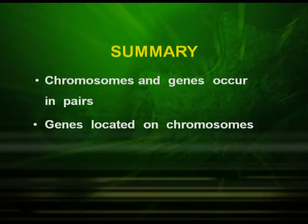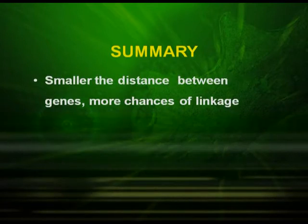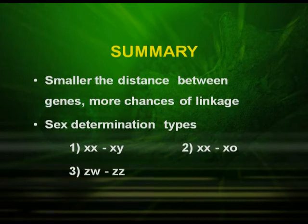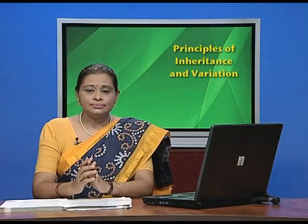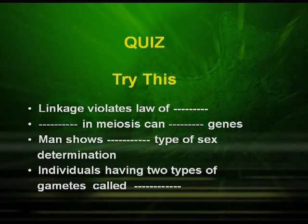Summary: chromosomes and genes occur in pairs; genes are located on chromosomes; the tendency of genes on the same chromosome to be inherited together is called linkage; smaller the distance between genes, greater the linkage; sex determination types are XX/XY, XX/X0, ZW/ZZ, and Z0/ZZ. Quiz: chromosomes and genes occur in [pairs]; linkage discovered by [Bateson] and [Punnet]; paired state of chromosomes restored in [zygote] formation; linkage violates the law of [independent assortment]; [crossing over] in meiosis can [separate] genes; man shows [XY] type of sex determination. In the next episode, we will discuss genetic disorders, mutation, and pedigree analysis.